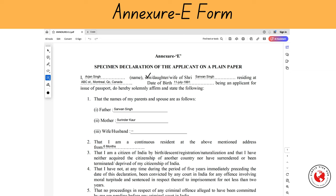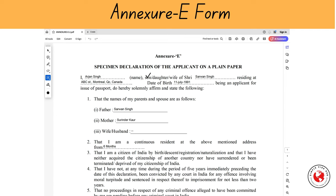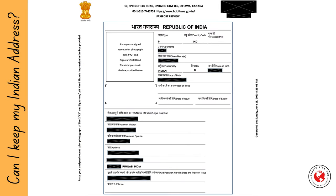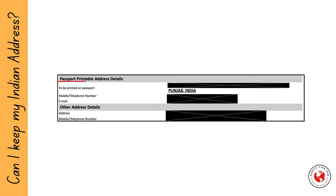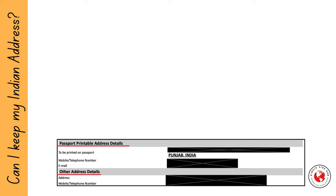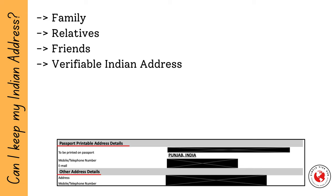I actually filled out my form at the counter at the BLS center. The next common question is whether you can keep your Indian address on the passport after renewal. The short answer is yes. When you fill out your application form, there is a section called 'Printable Address' — fill out your Indian address there, as any address mentioned here will be verified by police and then printed on the passport. Your Canadian address goes in the 'Other Address Details' section. Make sure any Indian address you submit belongs to family, relatives, or friends, as it will be verified by the Indian police station closest to that address.